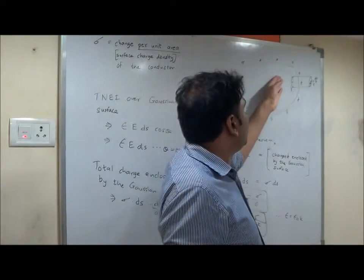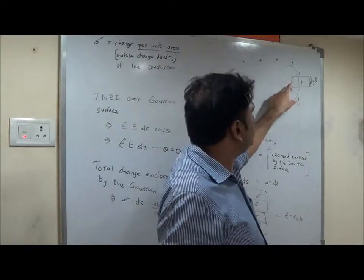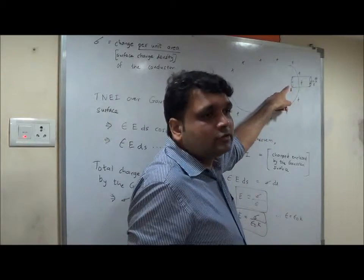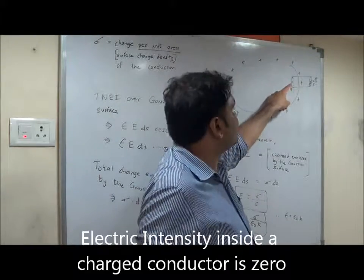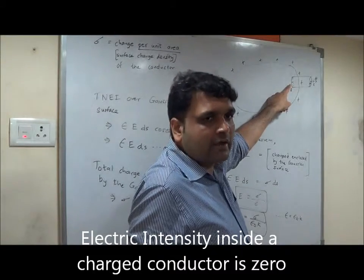Naturally, if I have a charged conductor inside, charge is zero. So if I keep a unit positive charge out here, there will be no charge inside to repel the unit positive charge. So electric intensity inside a charged conductor is zero. E is zero, electric intensity is zero at point B.